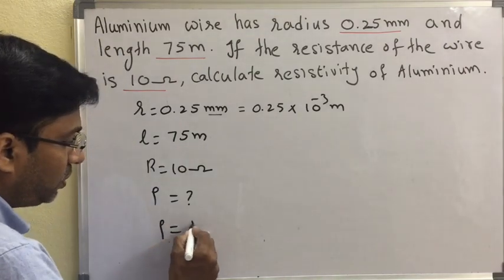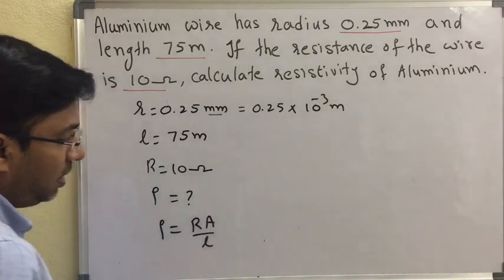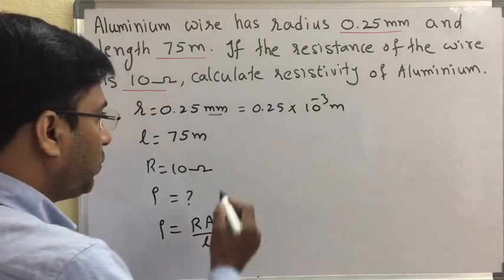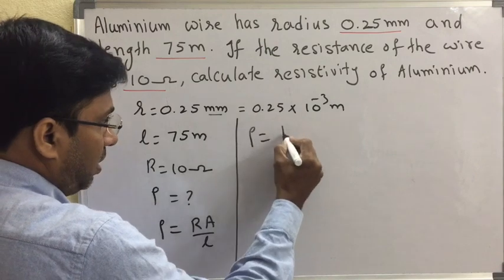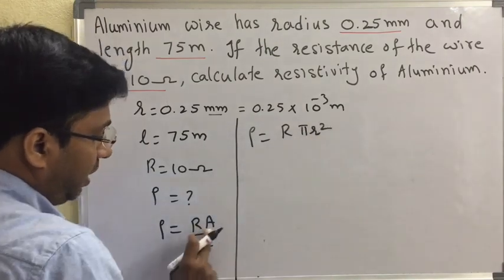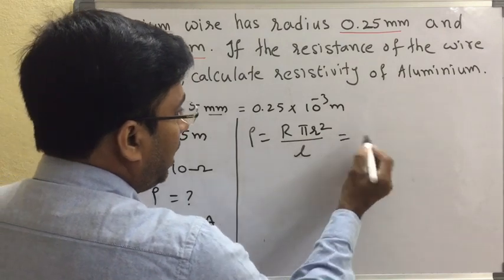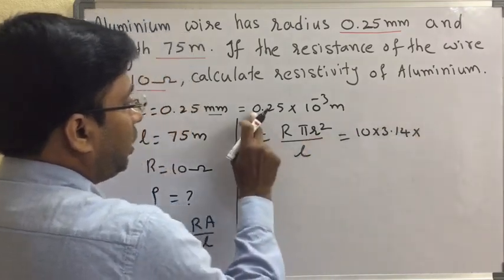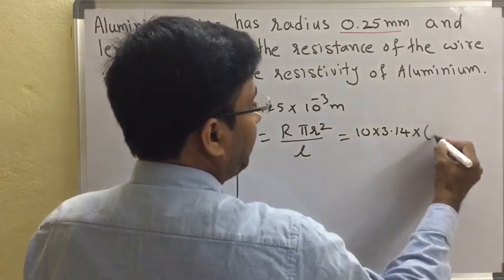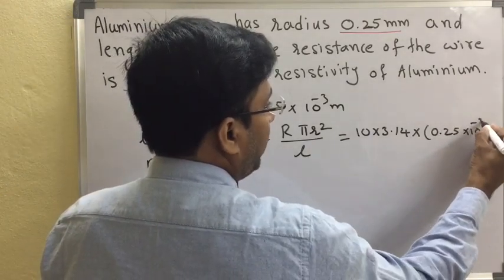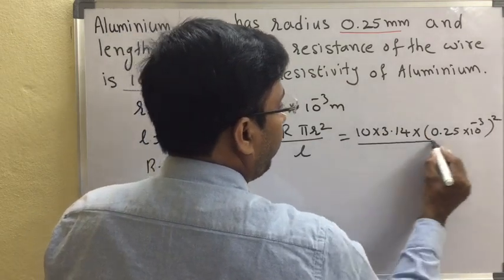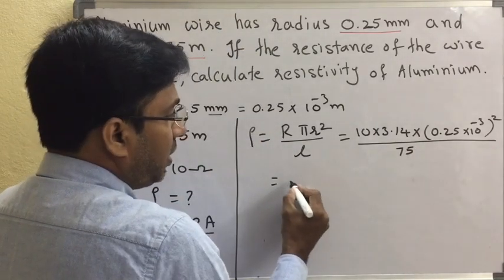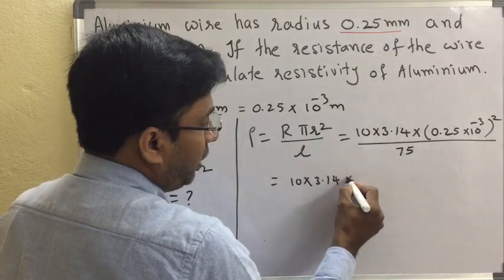The formula for rho is rho equal to R A by L. Since the question gives radius and not area, we use A equal to pi r square. So rho equal to R into pi r square divided by L. We substitute: R is 10, pi is 3.14, r is 0.25 into 10 power of minus 3, whole squared, divided by L which is 75.